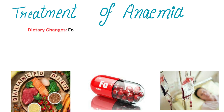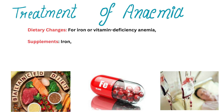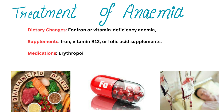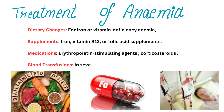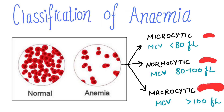Now the treatment of anemia depends on its cause. Common treatments include dietary changes for iron and vitamin deficiency anemia — adjusting your diet may help. Supplements such as iron, vitamin B12, or folic acid can be given. Third would be medications such as erythropoietin stimulating agents or corticosteroids in certain cases. And fourth, blood transfusions — in severe cases when the hemoglobin is critically low, we have to transfuse blood.